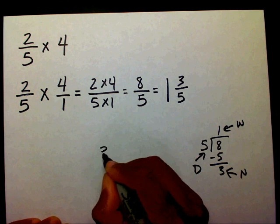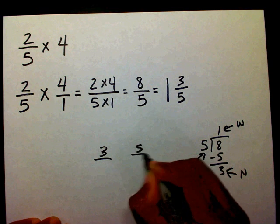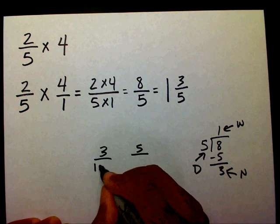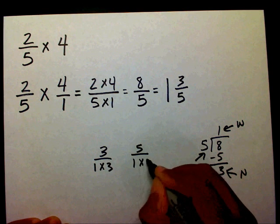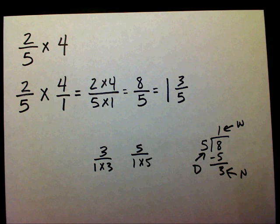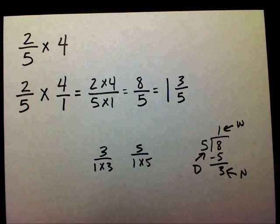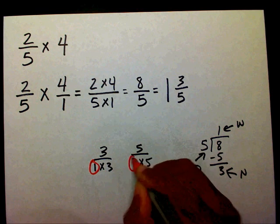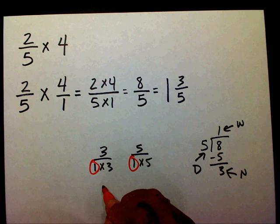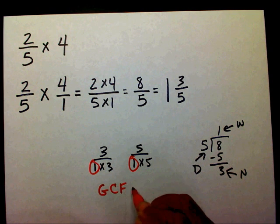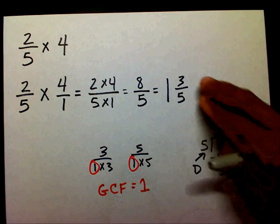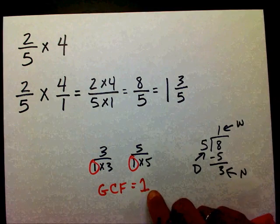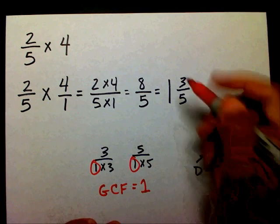I'm going to check and make sure this is in lowest terms. I'll write 3 and 5 and get my factors. Factors for 3 are 1 and 3. Factors for 5 are 1 and 5. I need to see what they have in common. Since they only have a 1 in common, the greatest common factor is 1. Whenever the greatest common factor of your numerator and denominator is 1, it's in lowest terms.